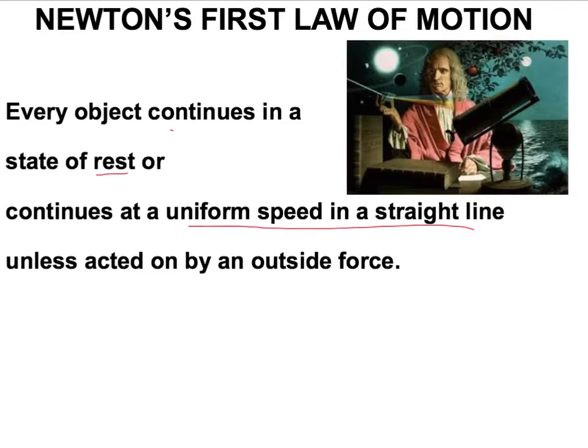So Newton's first law really just describes a couple of things: a state of rest, we called that static equilibrium before, and we said when something travels at a uniform speed in a straight line, we called that dynamic equilibrium.